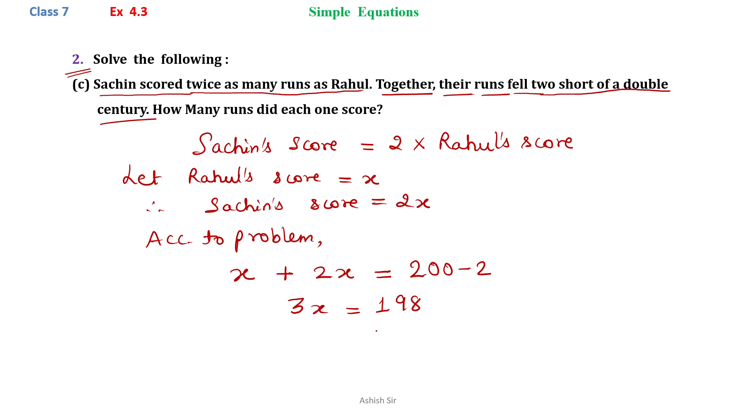3x equals to 198. x is equals to 198 divide by 3. Now we can cancel it. 3 sixes are 18 and 3 sixes are 18.